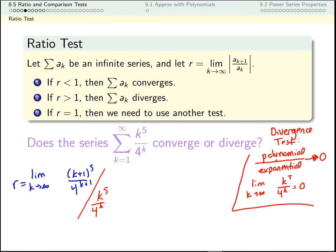And again, a nice thing to keep track of is this k to the fifth gave rise to this k to the fifth and this k plus 1 to the fifth. So it's nice to group those together. Then this 4 to the power k gave us this 4 to the k and this 4 to the k plus 1. And again, it's nice to group those together. 4 to the k plus 1 is in the denominator. 4 to the k gets flipped up to the numerator.